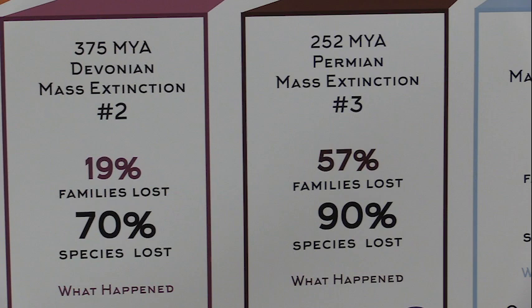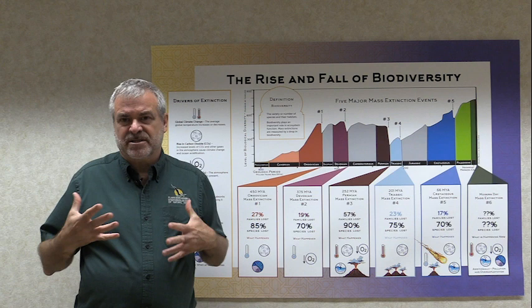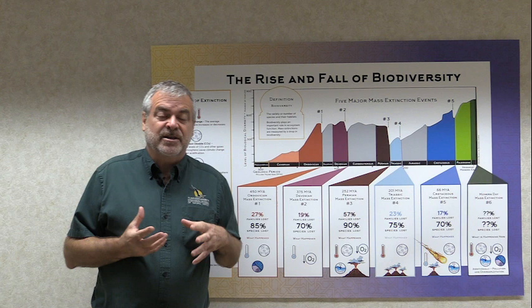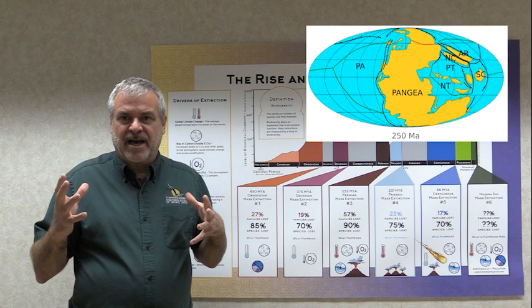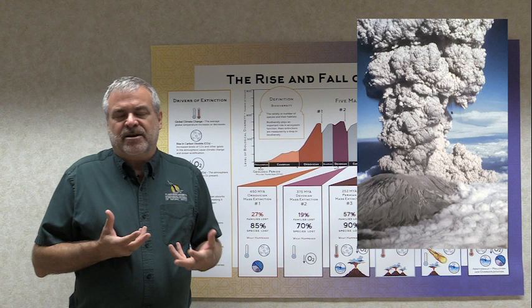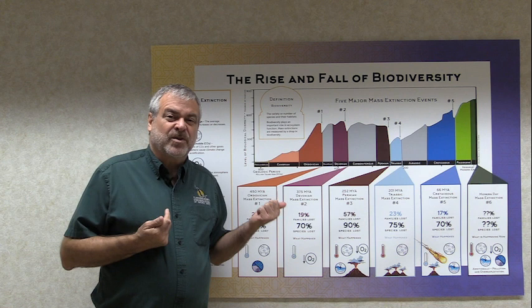Then you get to the Permian mass extinction — the huge one. We had massive volcanism in the Siberian Traps, which completely changed the atmosphere. At the same time we had Pangaea — one big continent — so there was very little coastline and not a lot of space for life. This massive volcanic event dumped methane and all sorts of gases into the atmosphere, changing the climate and heating it up. The result was an extinction of over 57 percent of marine families, which meant 90 percent of species were lost.